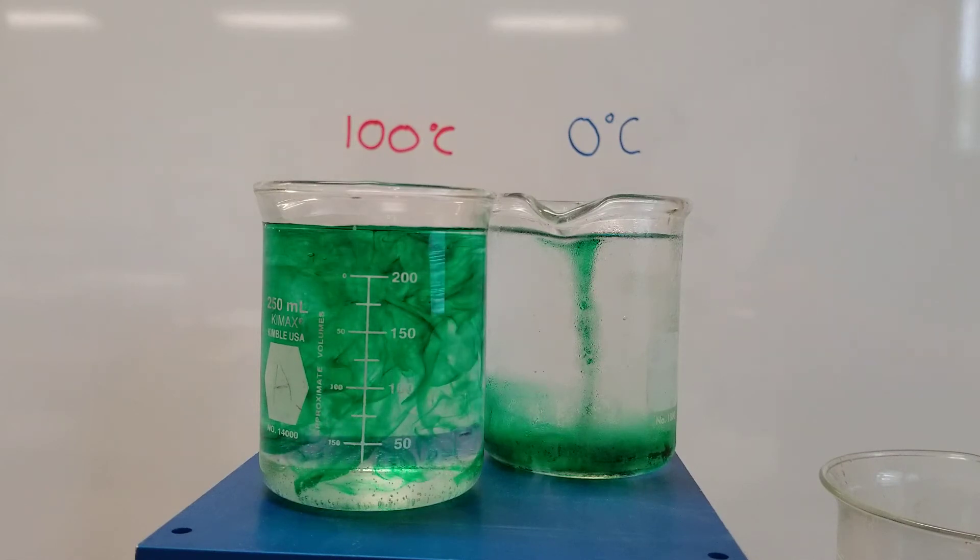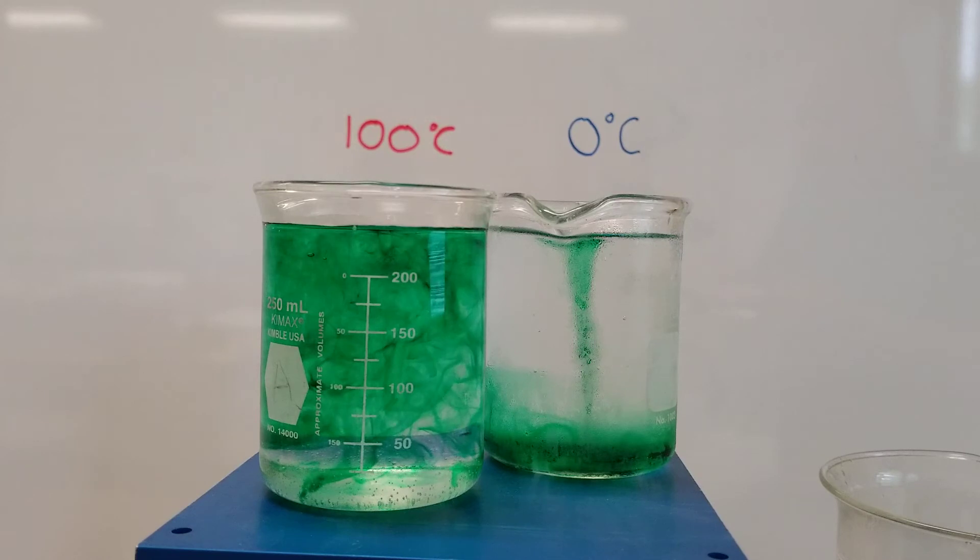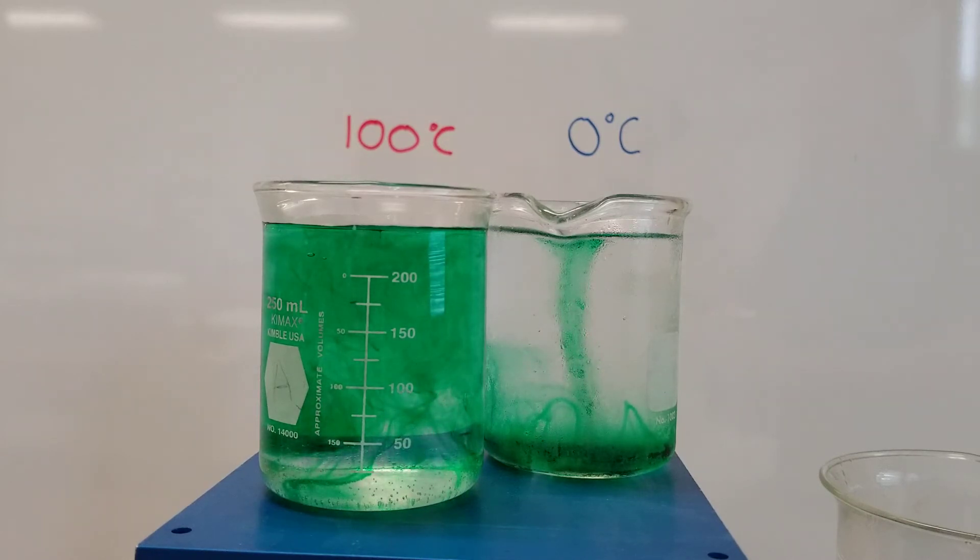So the first thing you'll notice is that there's a lot more motion going on in the hot beaker compared to the cold one on the right. In the hot beaker, most of the food coloring just kind of sank in a trail straight down to the bottom. Whereas in the one on the left that's warm, it kind of sank to the bottom and spread out as it did, and it kind of did sort of like a swirling thing almost.